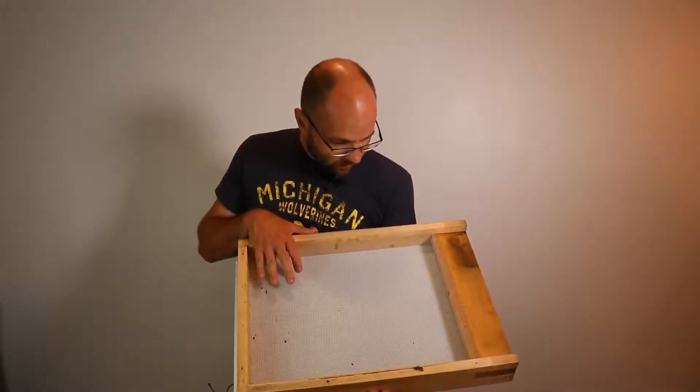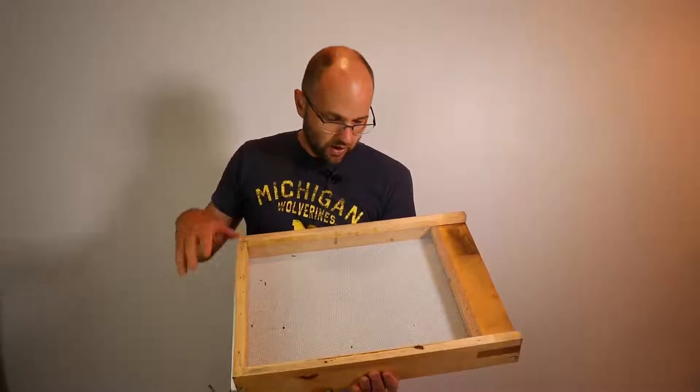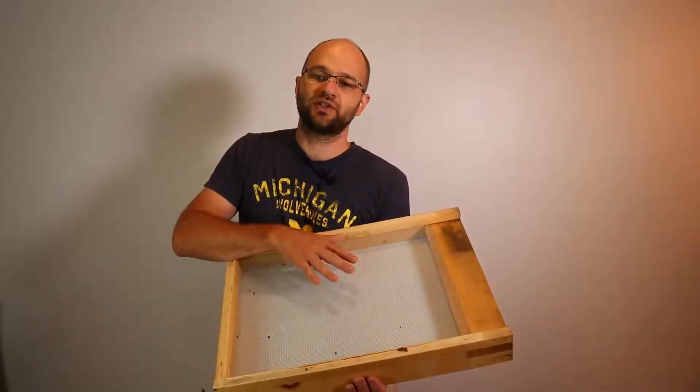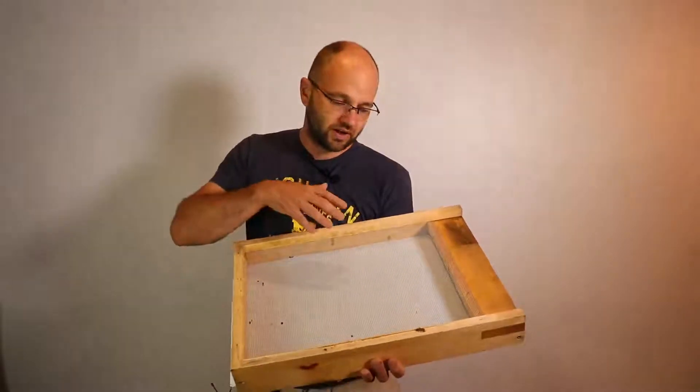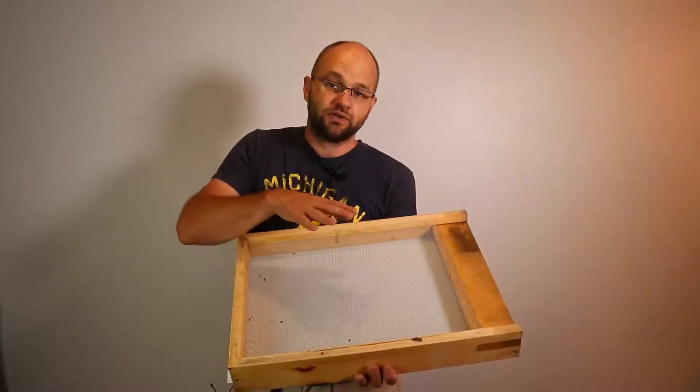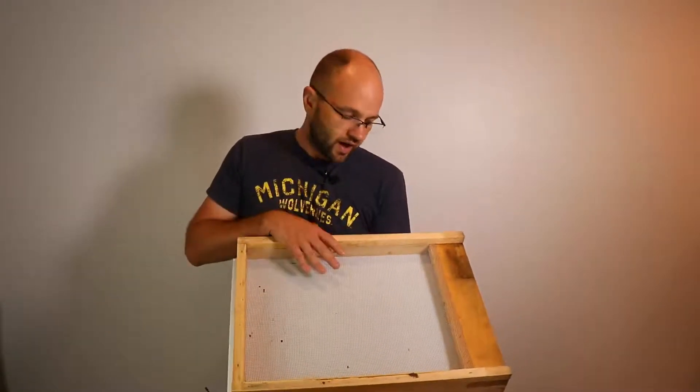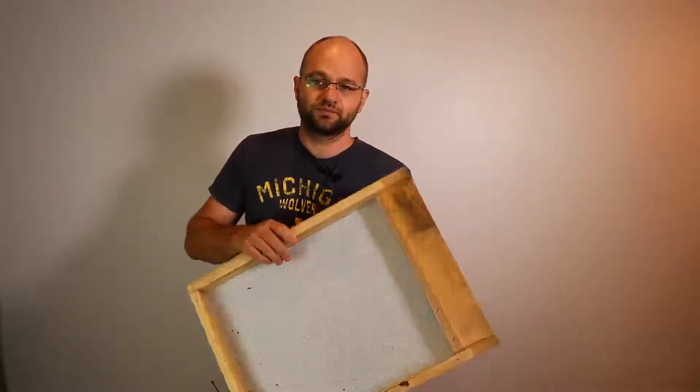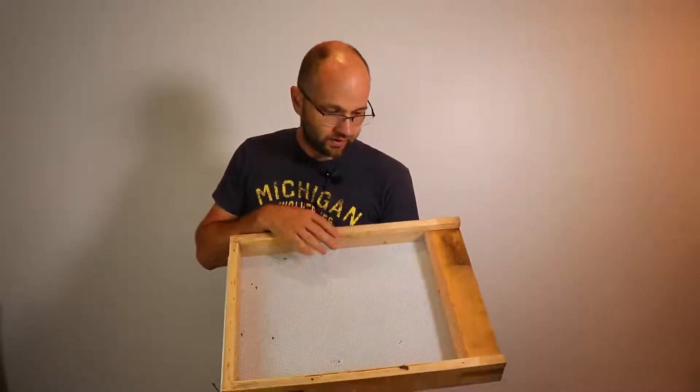Now, if you don't put Crisco on the bottom and you just have this insert in here, all that stuff is falling to the bottom. That gives the hive beetles a place to hide from the bees. So, you have to be careful of that because if you're not putting Crisco on here and you have this insert in, those hive beetles are actually going to have a place that's protected from the bees and not providing any benefit in reducing the hive beetle numbers.